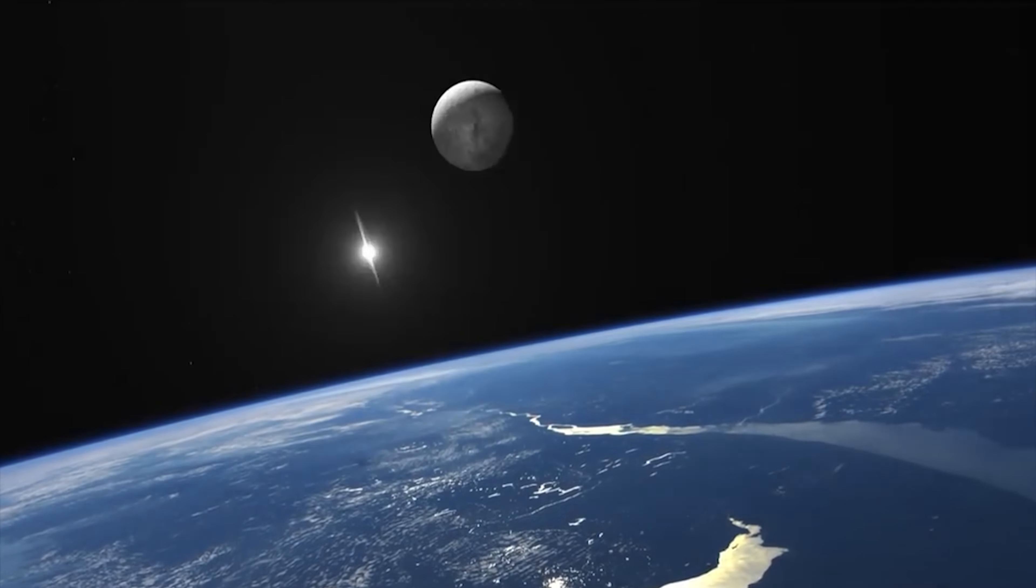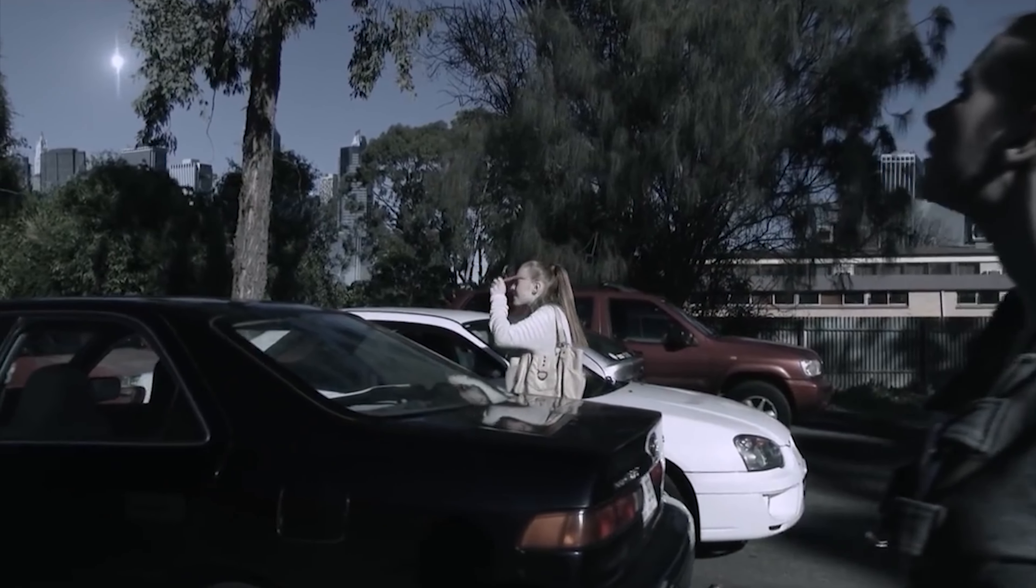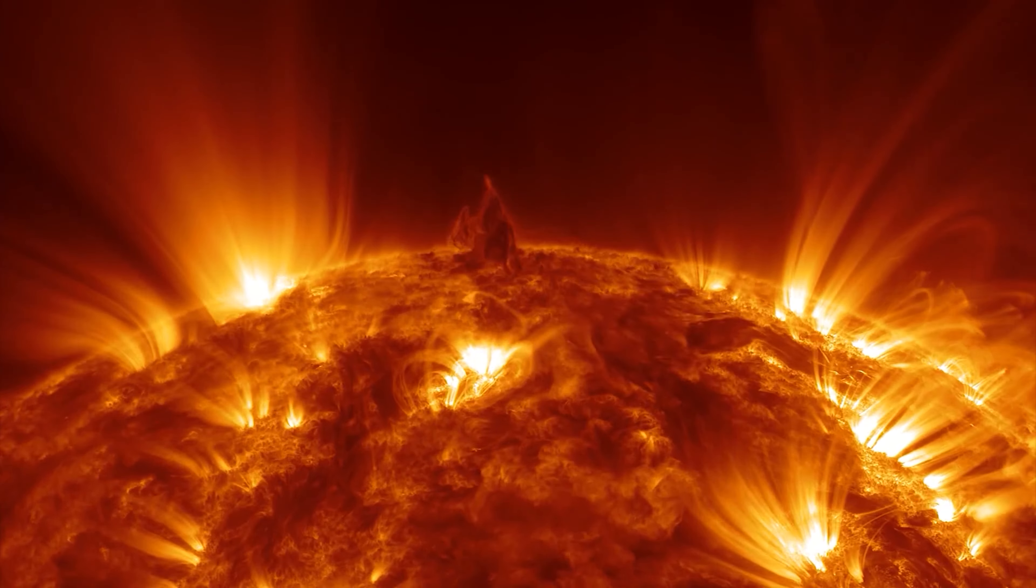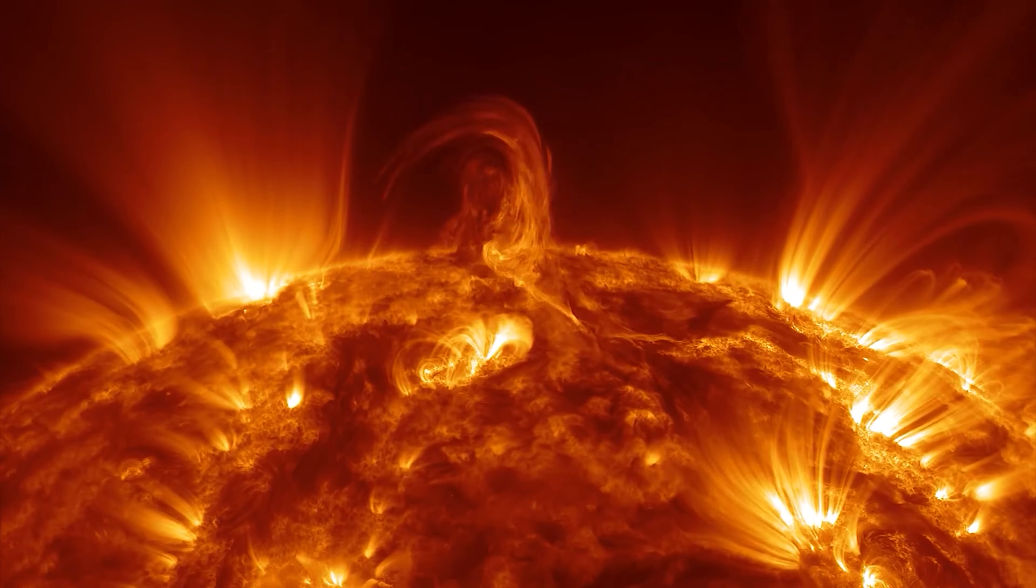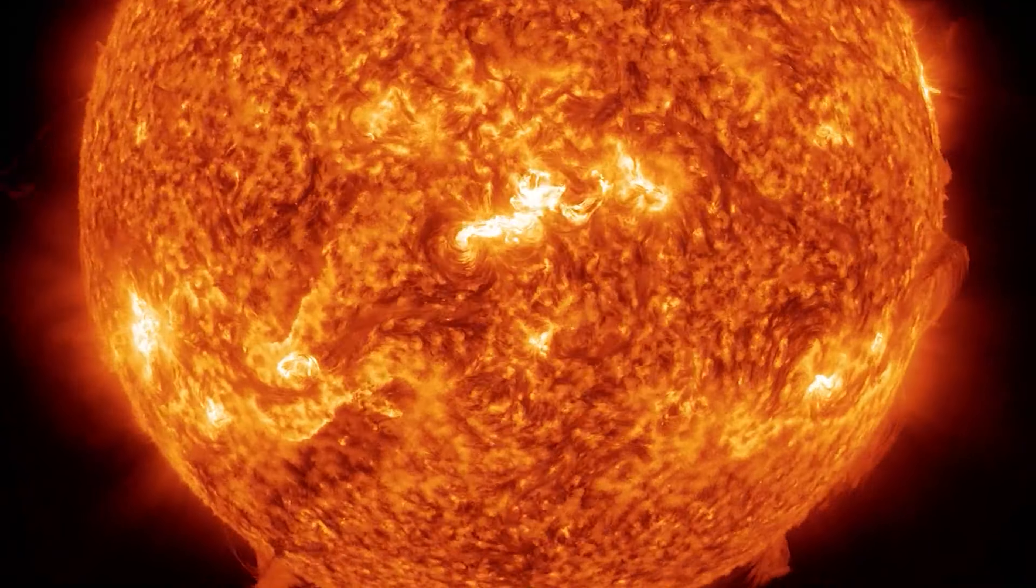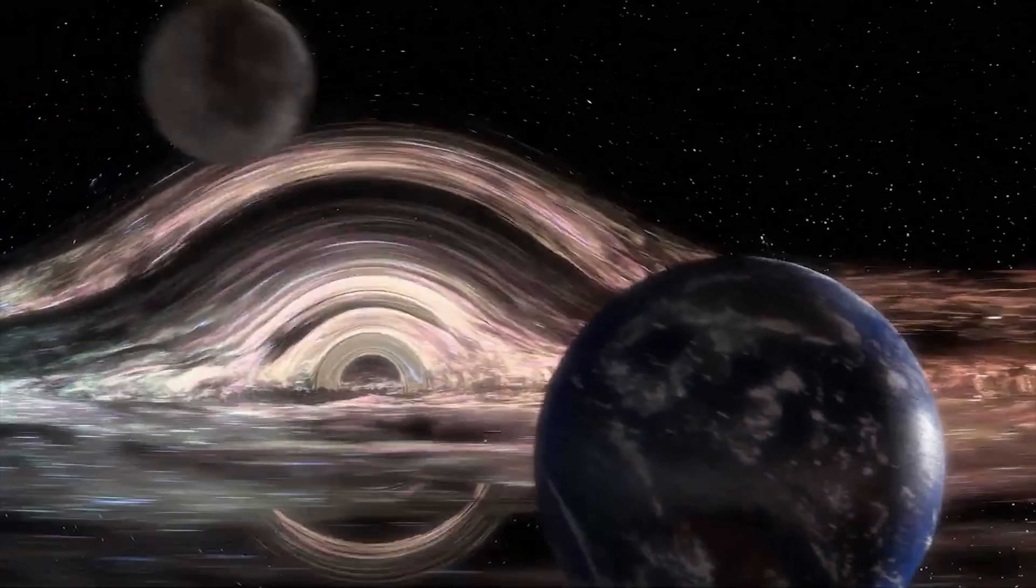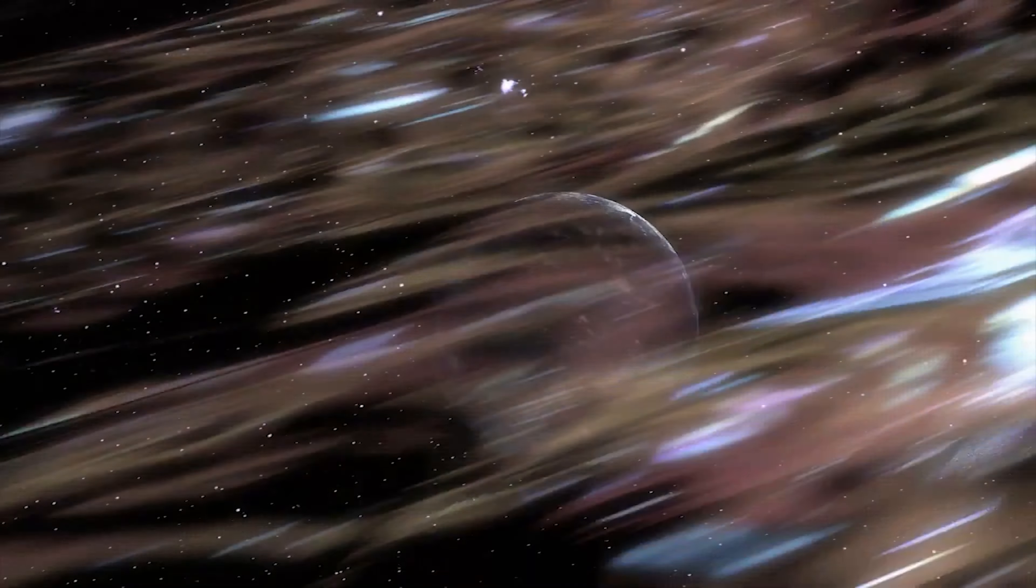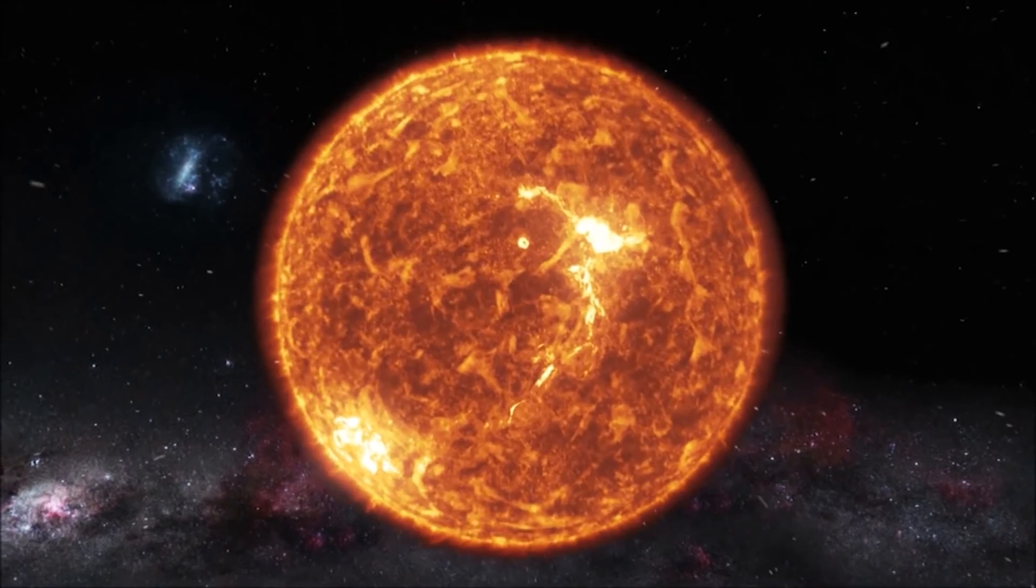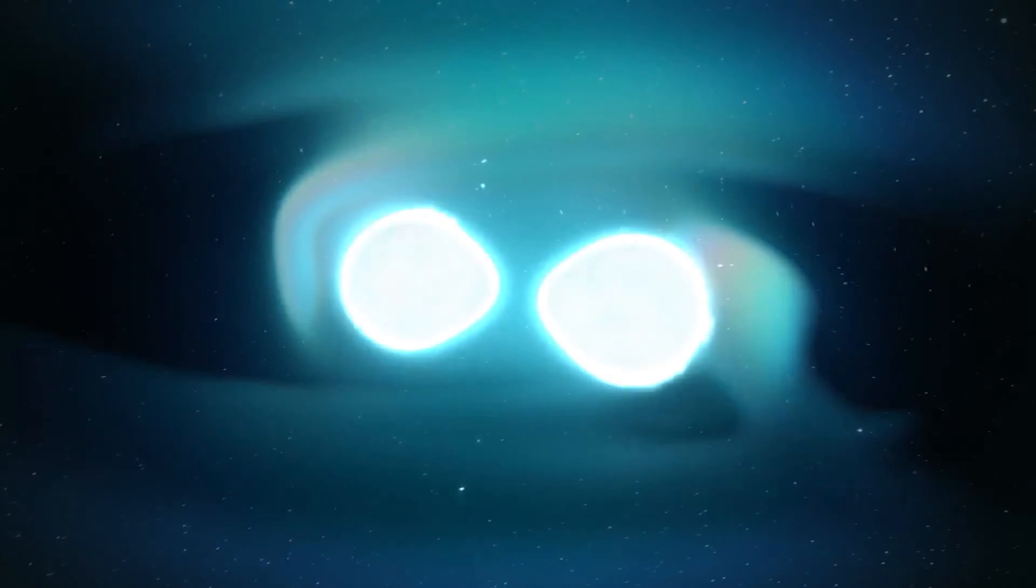In short, a black hole will essentially never spontaneously appear on Earth. This is because even the Sun does not have enough mass to contract until it becomes a stellar-mass black hole. Needless to say, the Earth is very small compared to the Sun. To create a supermassive black hole, all the stars near the Earth would have to merge with the Sun and collapse in a friendly manner.